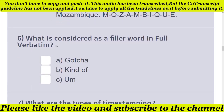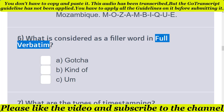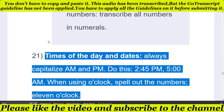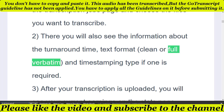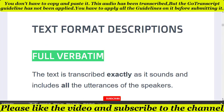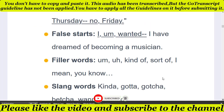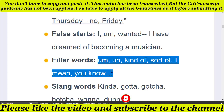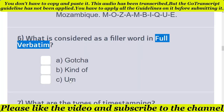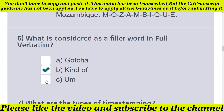Sixth question: what is considered as a filler word in Full Verbatim? First of all, you simply read the Full Verbatim section. Here is the Full Verbatim section. Let's move to the filler word. So these words are filler words: 'kind of,' 'sort of,' 'I mean,' 'you know.' These are filler words in Full Verbatim. So B and C are considered as filler words in Full Verbatim.